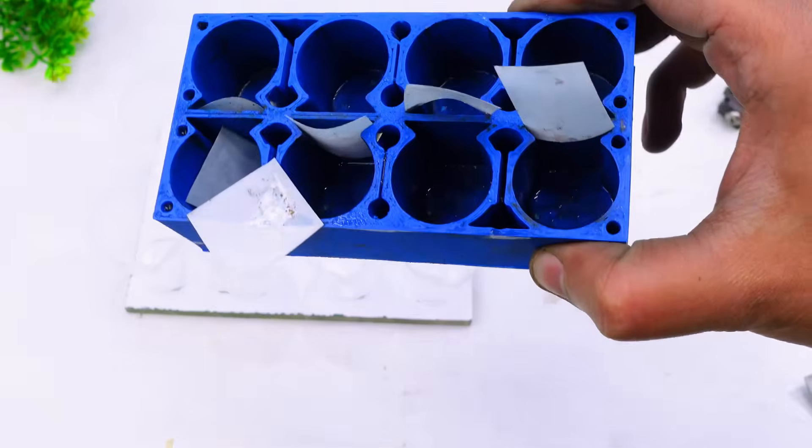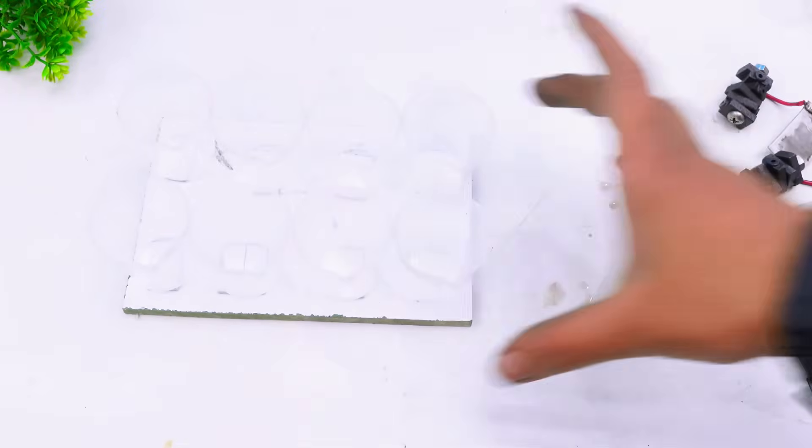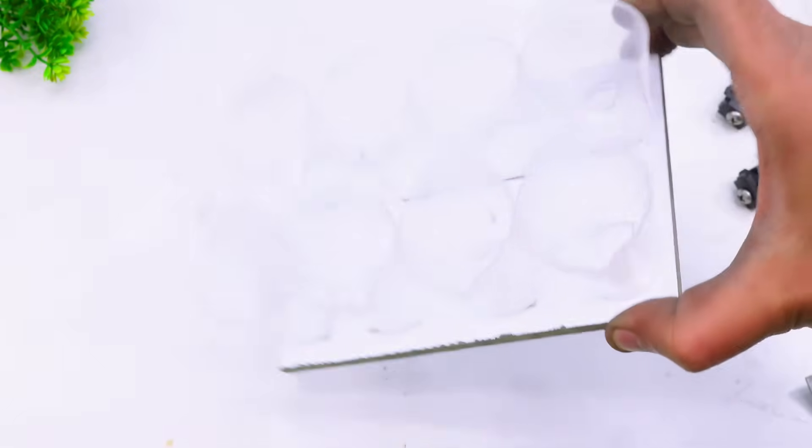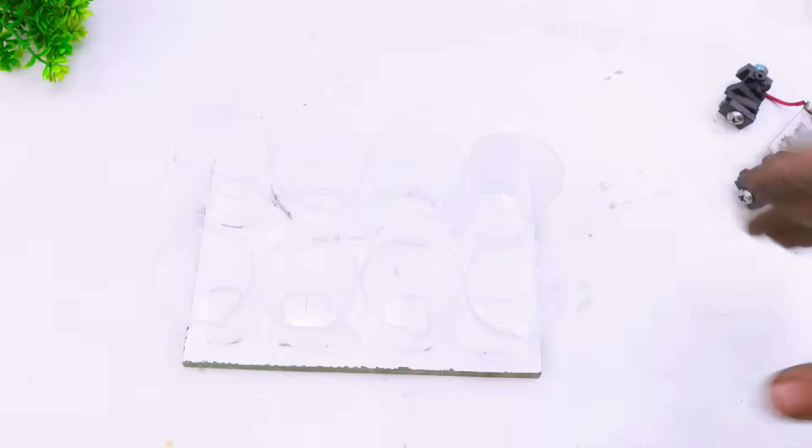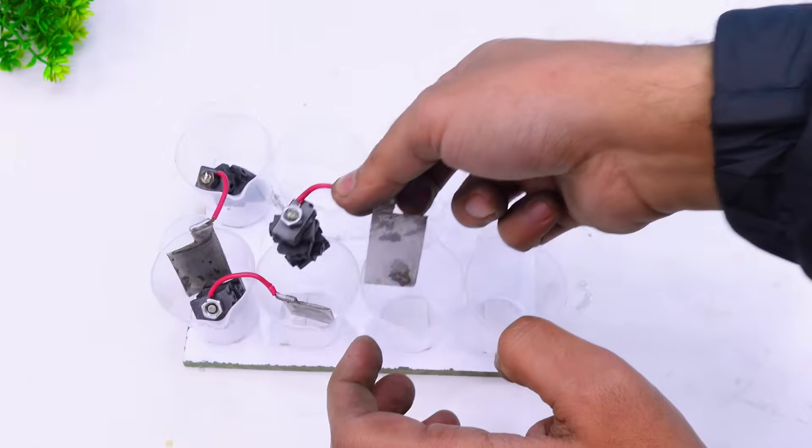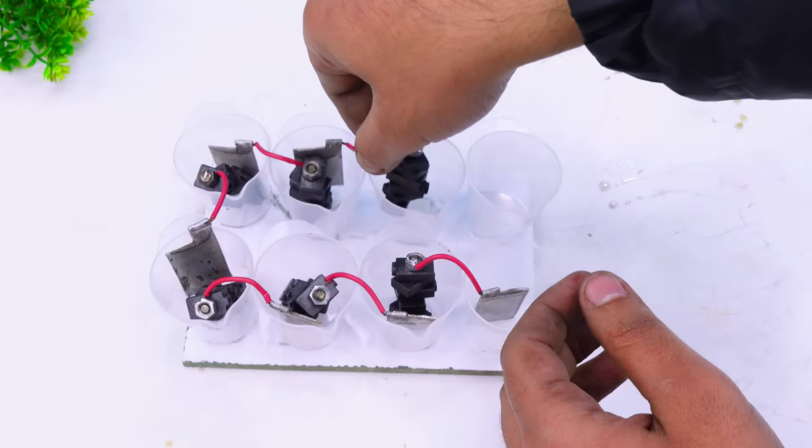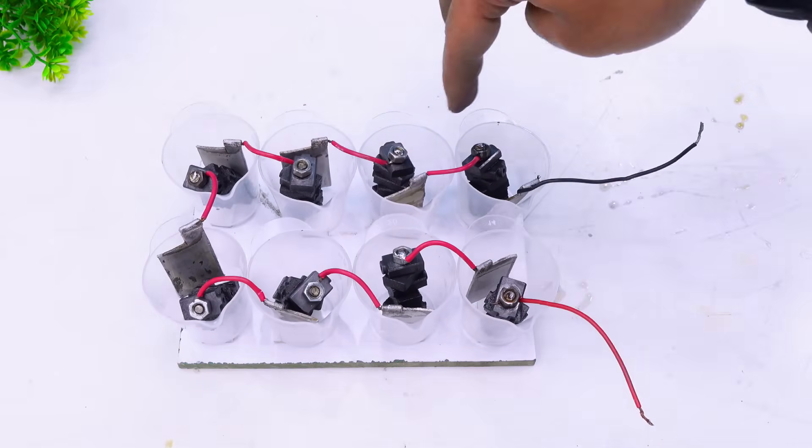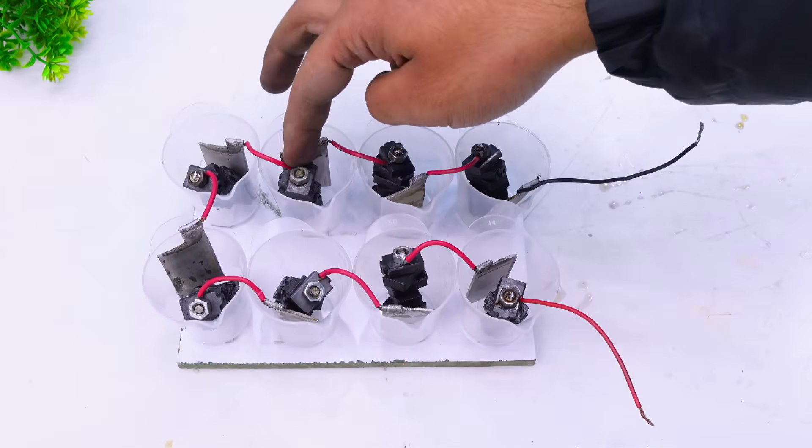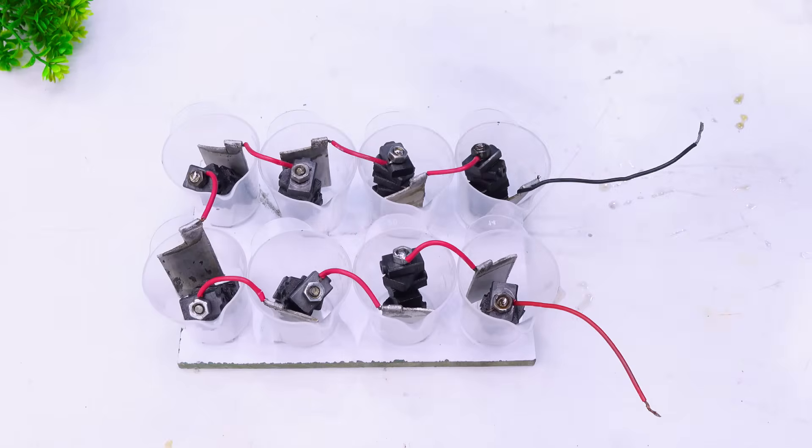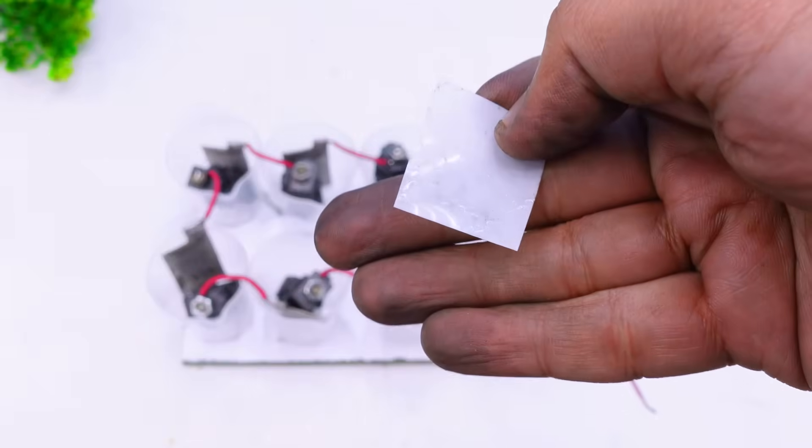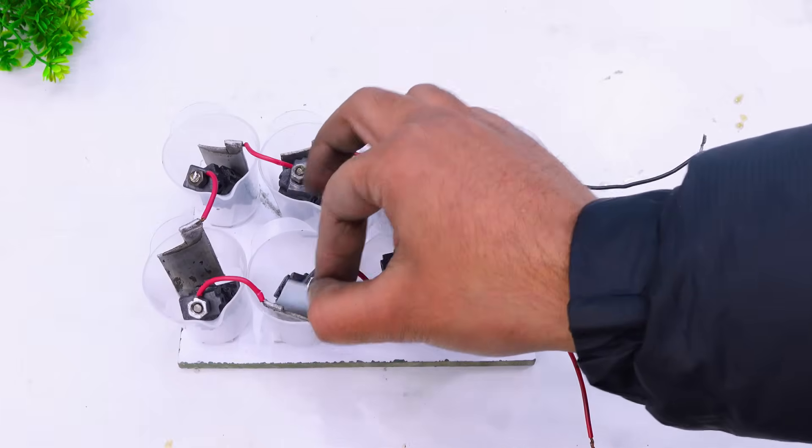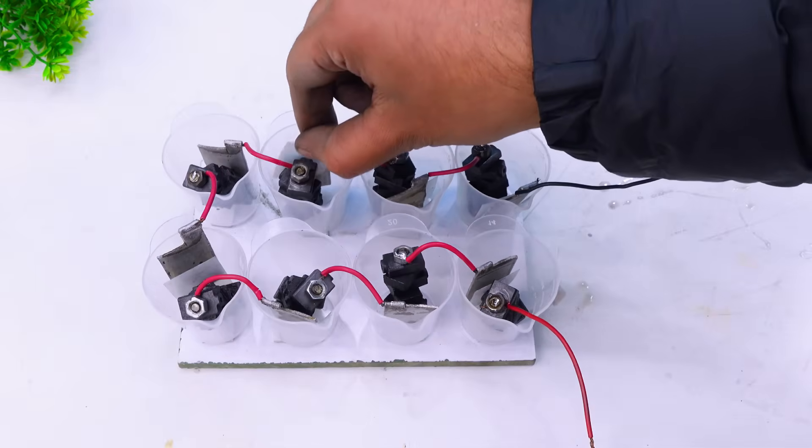Now guys. I believe there is some issue with the 3D print. So I'm going to use these plastic cups on this wooden base for testing. So I've placed all the plates. And now all that is left is to place a separator in between to prevent any possible short circuit. So same separators as before. Done.